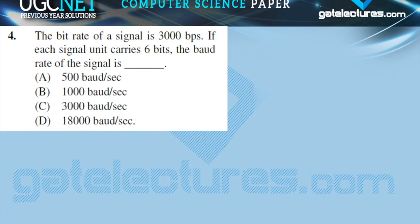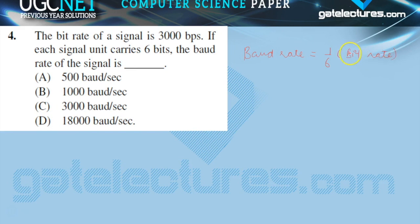The next question: the bit rate of a signal is 3000 bps. If each signal unit carries 6 bits, the baud rate of the signal is? This is a direct formula-based question. Baud rate = bit rate divided by bits per signal unit = 3000 divided by 6 = 500 baud per second.